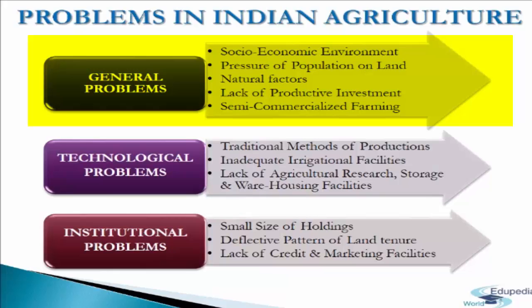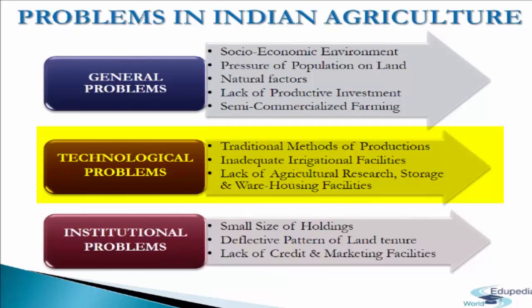Now we switch to technological problems. The first is traditional methods of production. Most Indian farmers continue to use outdated wooden ploughs and bullocks, with extremely limited use of new high-yielding variety seeds, pesticides, and fertilizers, resulting in very low agricultural productivity.